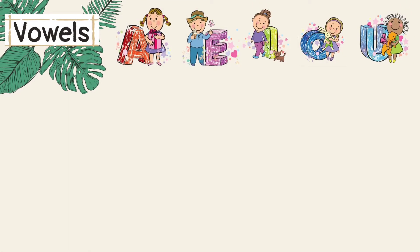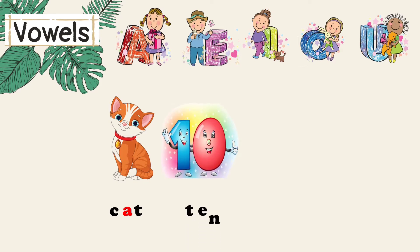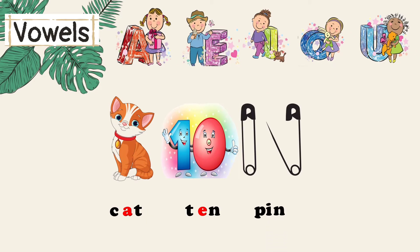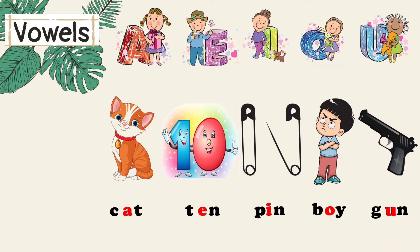Now let us find vowels in words. C-A-T, cat — here A is a vowel. T-E-N, ten — here E is a vowel. P-I-N, pin — here I is a vowel. B-O-Y, boy — here O is a vowel. G-U-N, gun — here U is a vowel. In the words cat, ten, pin, boy, gun, the letters other than the vowels are consonants.